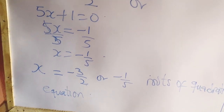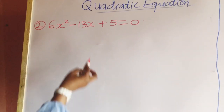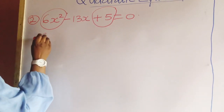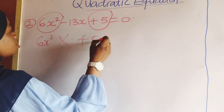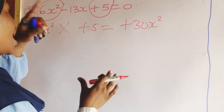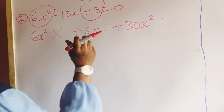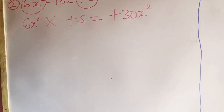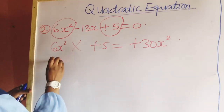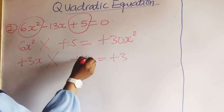Let's have another example. Example 2: 6x squared minus 13x plus 5 is equal to 0. The first step is that you have to multiply the first term by the last term, the constant. So 6x squared multiplied by plus 5 is equal to plus 30x squared. Now look for two factors of plus 30x squared that if you add you must get minus 13x. Factors of 30 are 1, 2, 3, 5, 6, 10, 15, and 30. We can see that 10 and 3: plus 3 multiplied by plus 10 gives plus 30x squared.